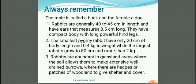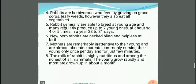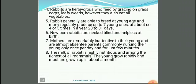Rabbits are abundant in grassland areas where the soil allows them to make extensive well-drained burrows, and where there are thickets or patches of woodland for shelter and cover. Rabbits are herbivores who feed by grazing on grass and leafy feeds; however, they also eat all vegetables. They are generally able to breed at a young age and regularly produce up to seven young ones about four or five times a year.